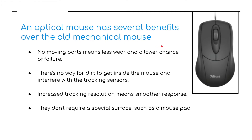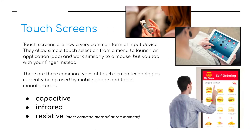The computer can then move the on-screen cursor to coordinate with the signal sent by the mouse. The optical mouse has several benefits over the old 1980s system: no moving parts mean less wear and a lower chance of failure, no dirt can get inside the mouse, increased tracking resolution means smoother response, and they don't require a special surface such as a mouse pad.